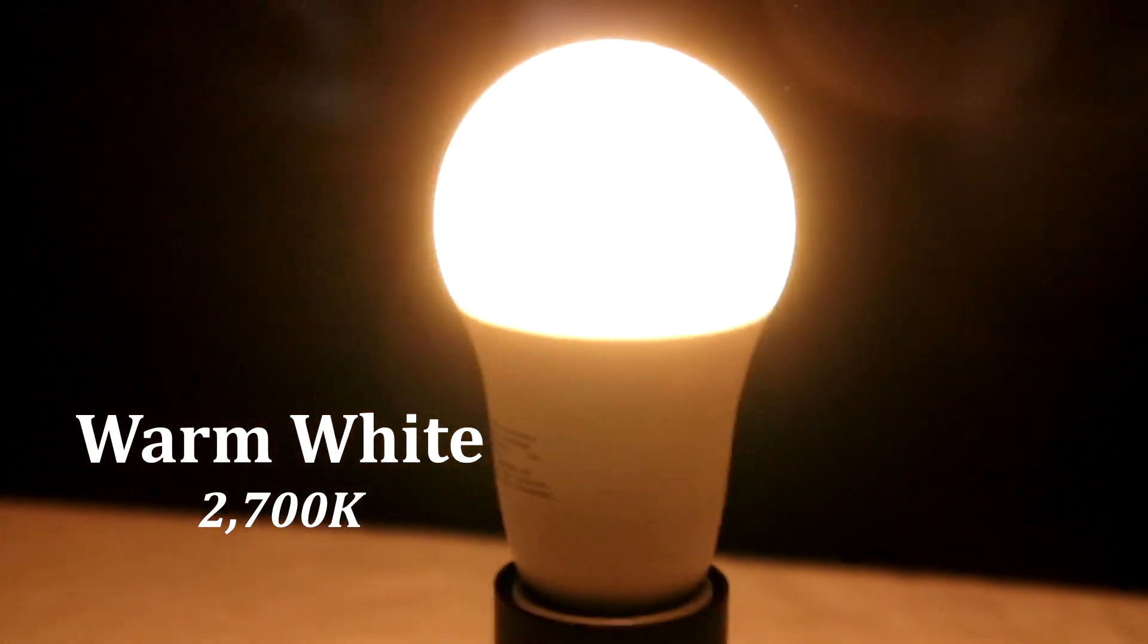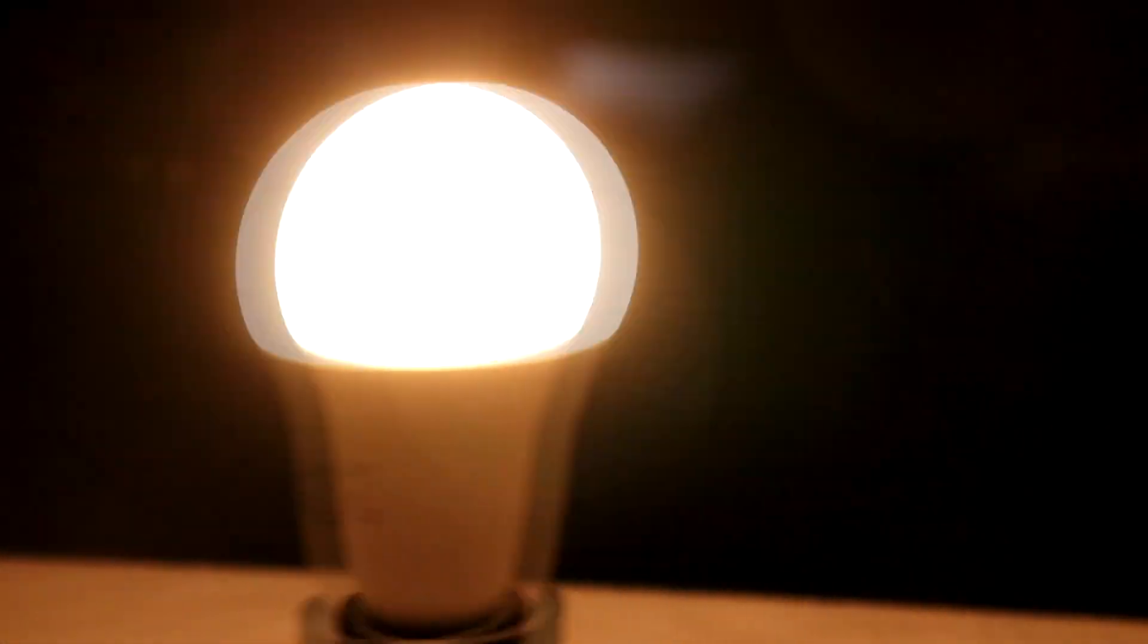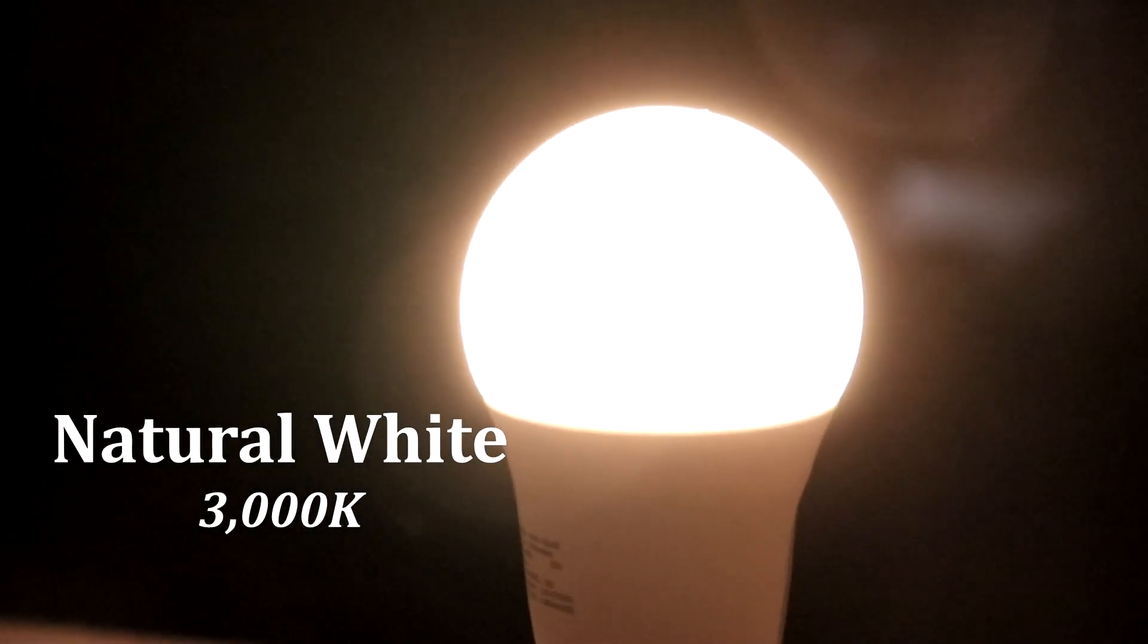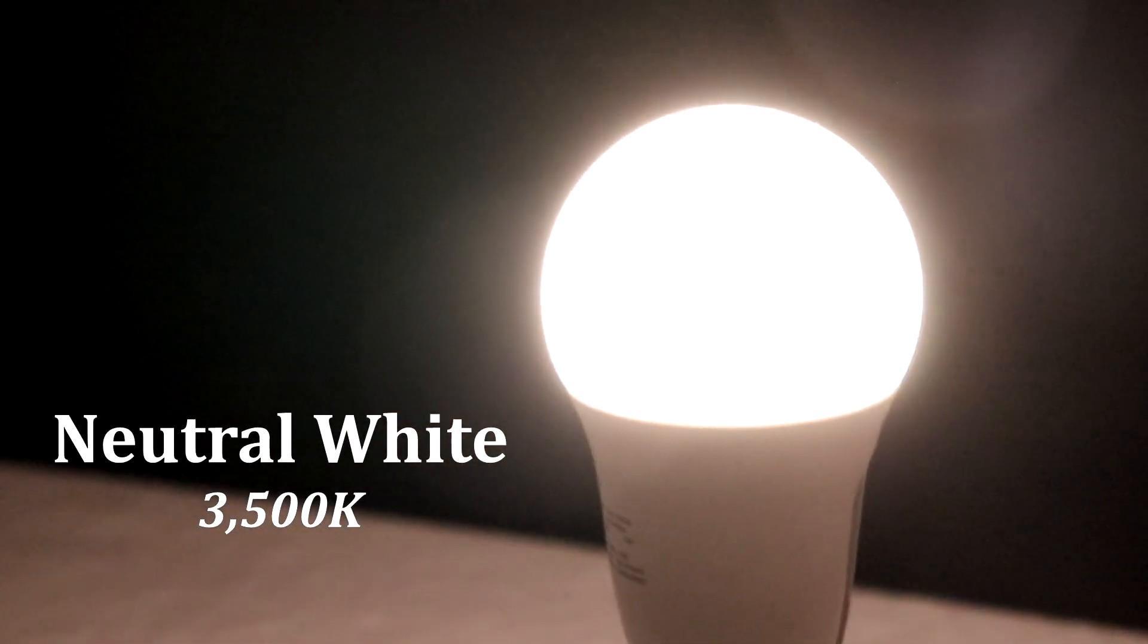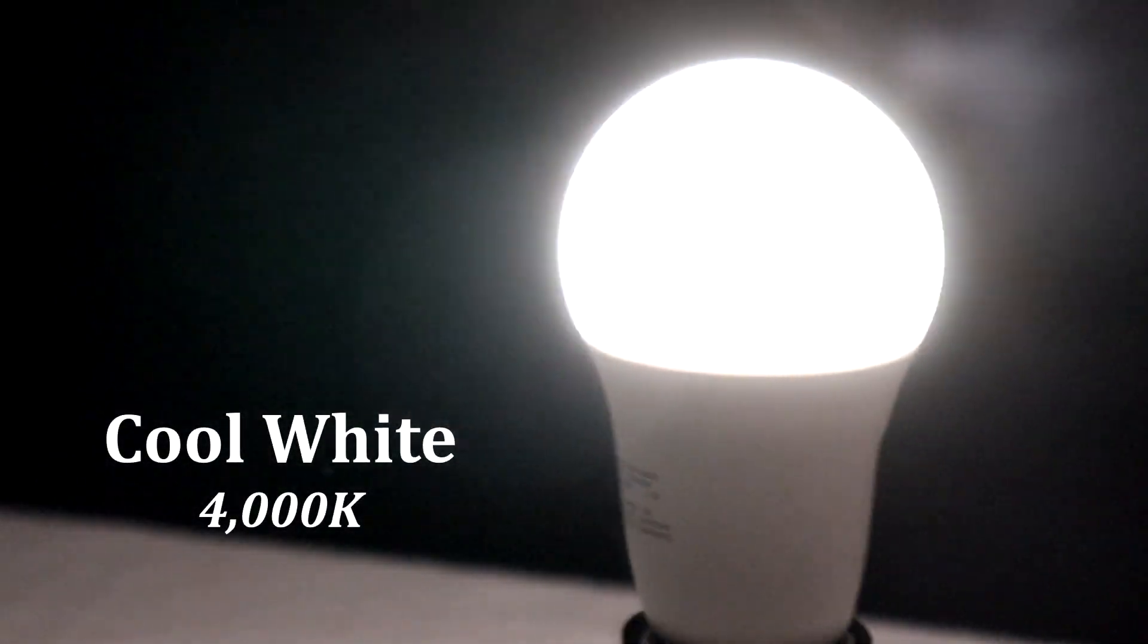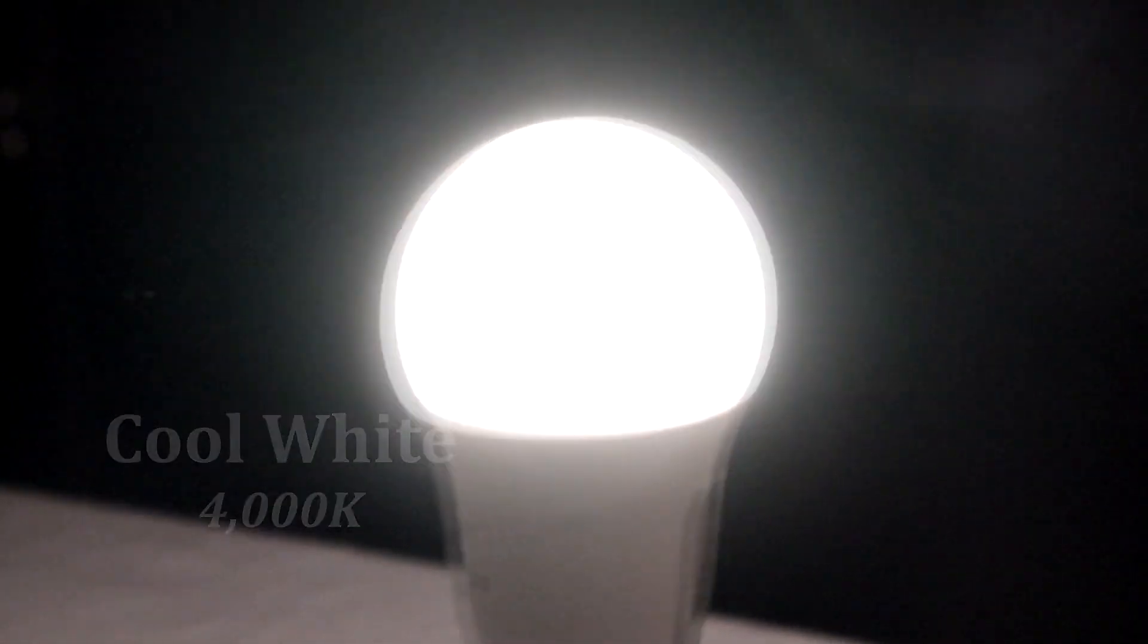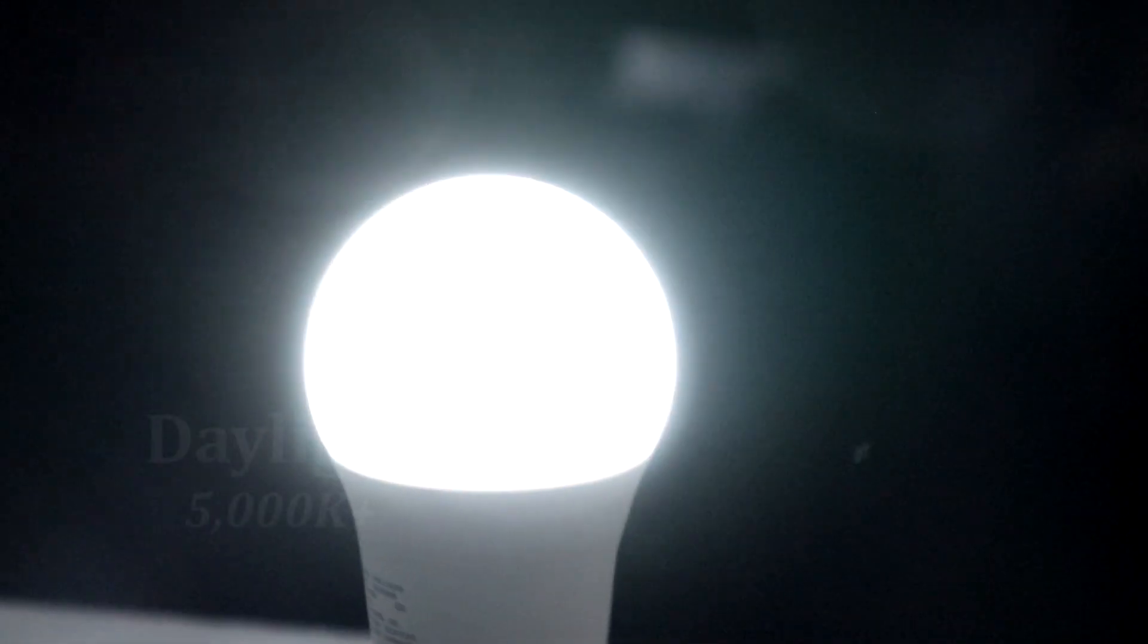Now that's great, but what are the names of these different color temperatures? Well, any light bulb with a color temperature of 2700 Kelvin or less, we call warm white. After that, it's natural white. Then neutral white. Cool white. Then finally daylight.